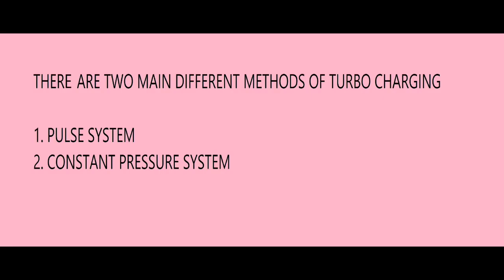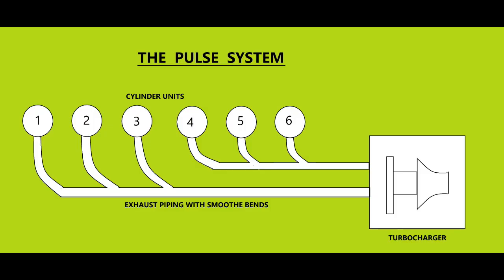There are two main methods of turbocharging: the pulse system and the constant pressure system. Slow speed crosshead engines mostly use the constant pressure system, while medium speed four-stroke trunk piston engines use the pulse system. The pulse system utilises the kinetic energy and heat energy in the exhaust gas. Small diameter pipes with smoothly curved bends are used to maintain exhaust gas pressure and avoid energy loss. The exhaust valve may be timed to open slightly earlier to increase the energy in the exhaust gas pulse. To prevent exhaust gas pulses interfering with each other, groups of cylinders are connected separately to sections of the turbocharger nozzles. The pulse system is very responsive to engine load changes, which is why generator engines use it, and auxiliary blowers are not required.